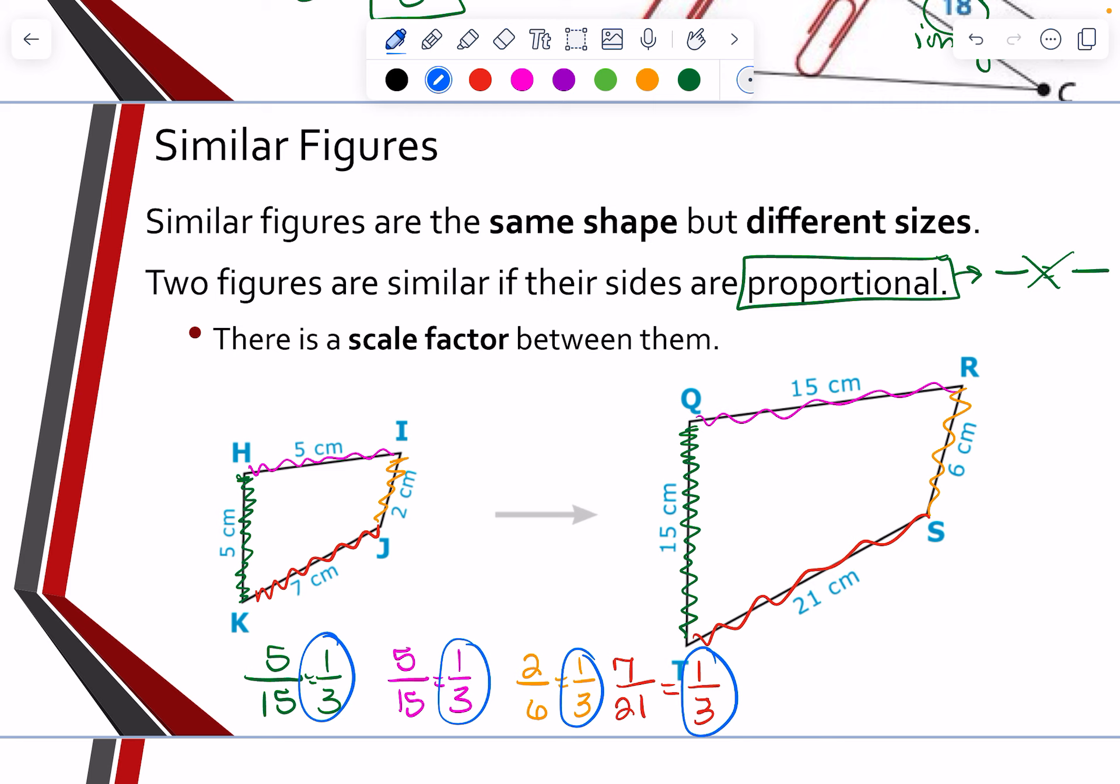You will notice that all four of these have a common ratio between the first image to the second. So what that would tell me is the statement that we are looking for is I would know HIJK is similar to QRST.